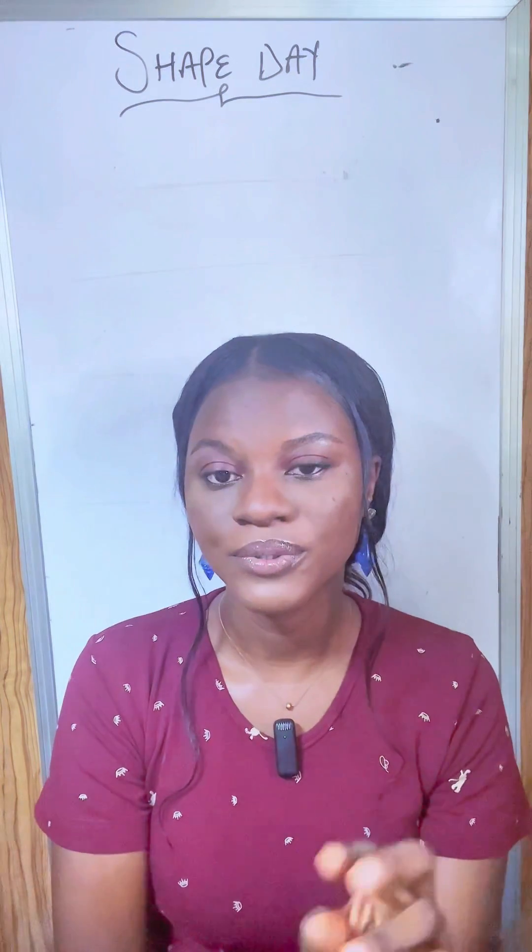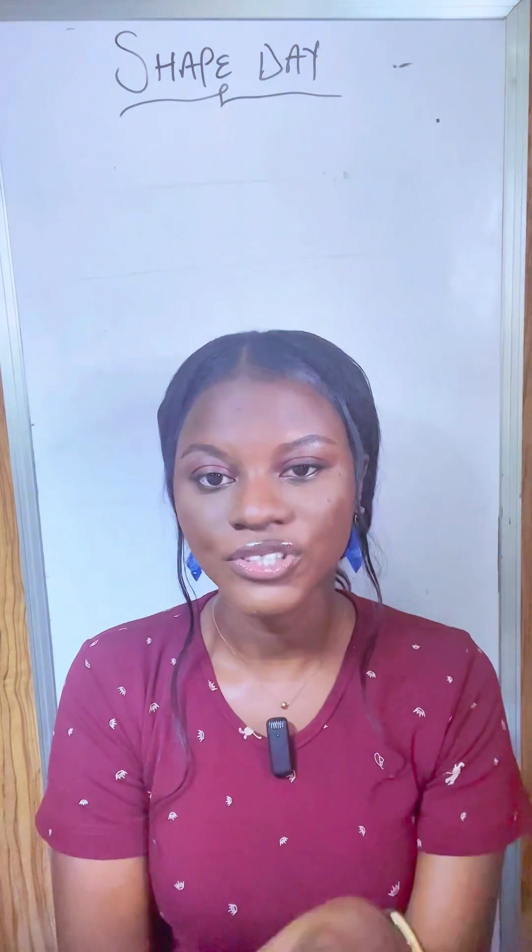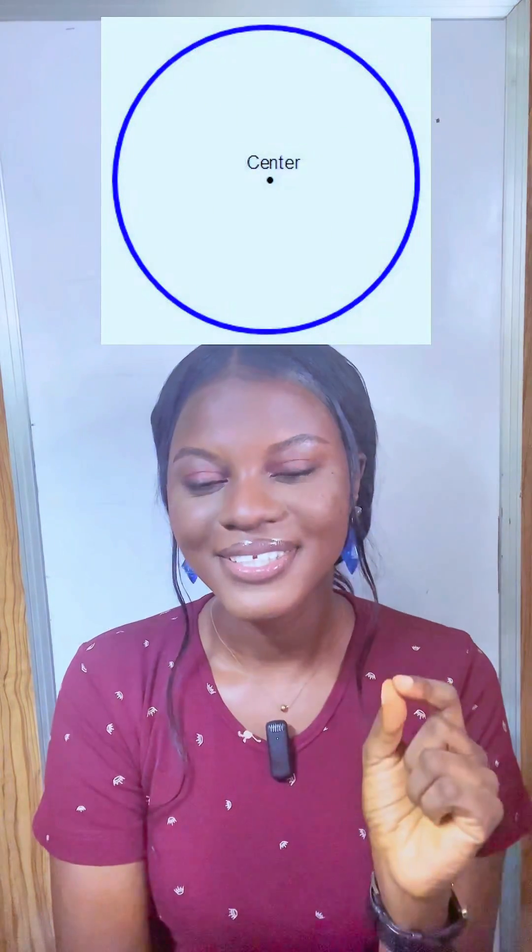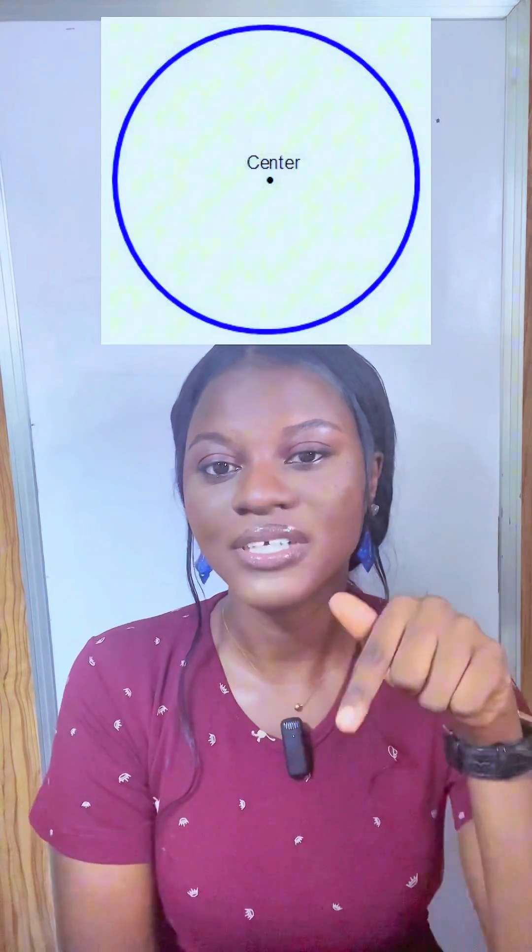So what is a circle? Recall when we said that a circle is a two-dimensional shape? Good. A circle is a shape where every point is the same distance from the center.